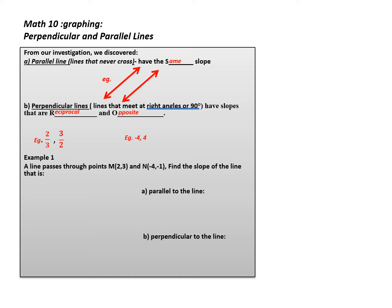Example 1. A line passes through points M and N. Find the slope of the line that is parallel and perpendicular to this line. In order to do this, I need to know the slope of the original line — that's my first step. Since I'm given coordinates, I'm going to use my coordinate formula.